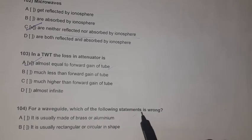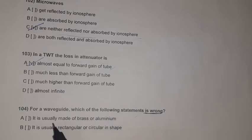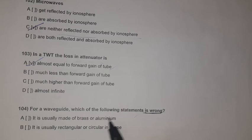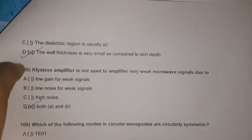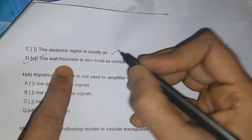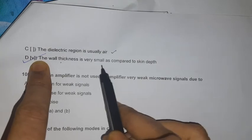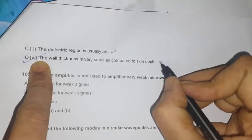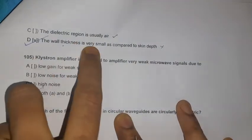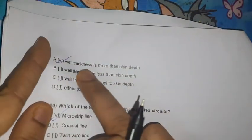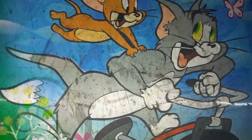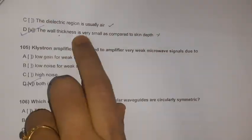Question 102: For a waveguide, which statement is wrong? The wall thickness is very small compared to skin depth — this is wrong. The wall thickness should be greater than the skin depth, as discussed in Question 97.